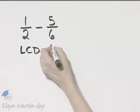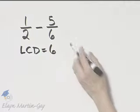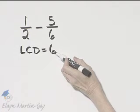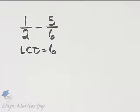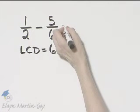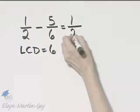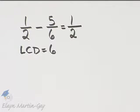The least common denominator is 6 because 6 is the smallest number that this denominator divides into evenly and this denominator divides into evenly. So let's now take a moment and rewrite each fraction so that we have a denominator of 6.